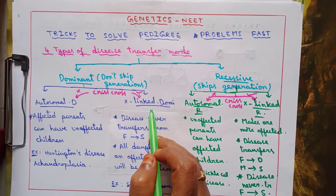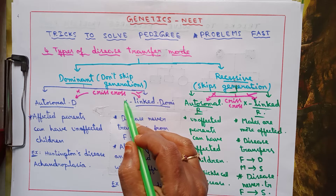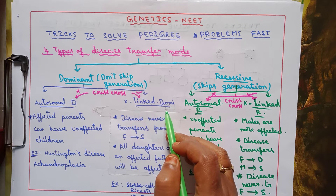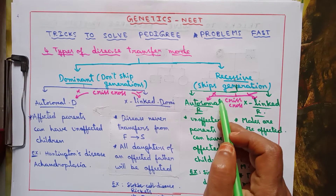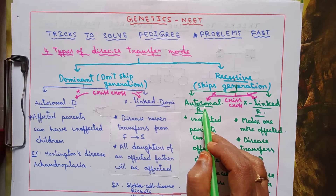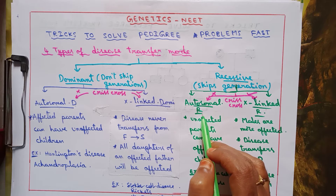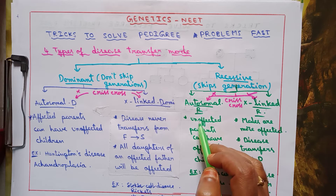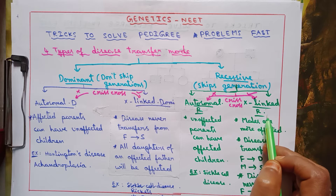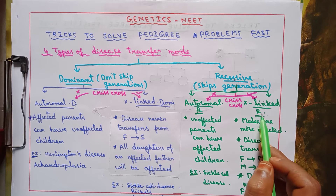X-linked dominant means the gene responsible for the disease is present on the x-chromosome, and its expression is dominant under homozygous or heterozygous dominant conditions. Autosomal recessive means the gene is on an autosome and expresses its trait only under homozygous recessive conditions. X-linked recessive means the gene is on the x-chromosome and its expression is recessive.